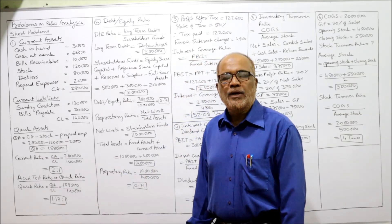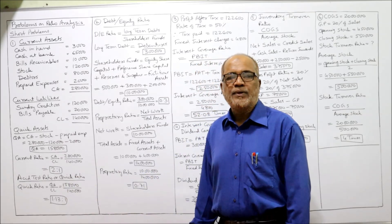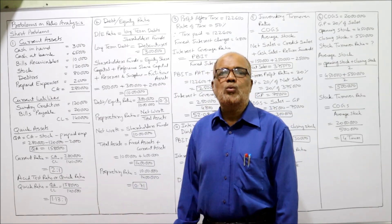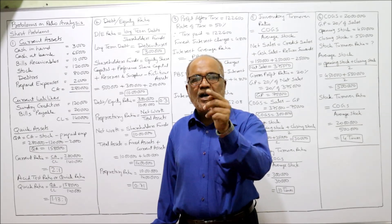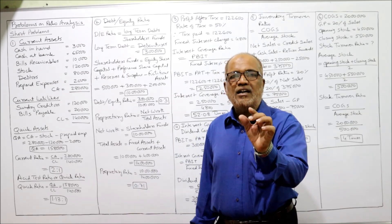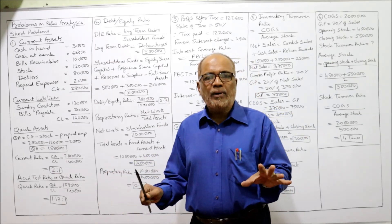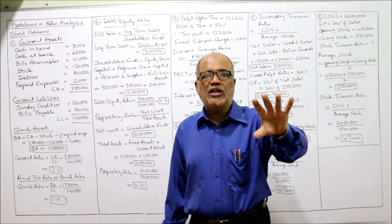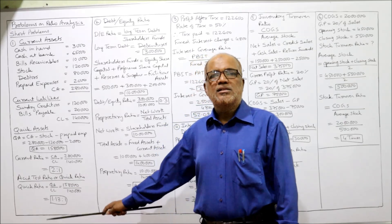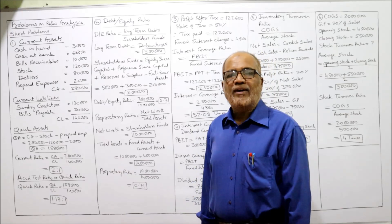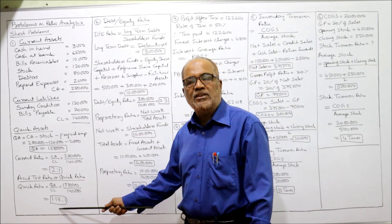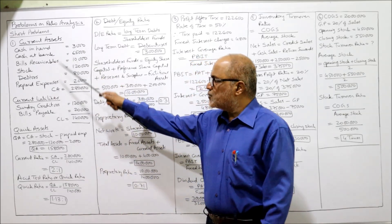Quick ratio formula: quick assets divided by current liabilities. Quick assets are 1,58,000; current liabilities are 1,40,000. Result: 1.13:1. This means for every 1 rupee of current liability, we have 1.13 rupees of quick assets. The standard quick ratio is 1:1, so having 1.13 is better than standard — the liquidity position is good.